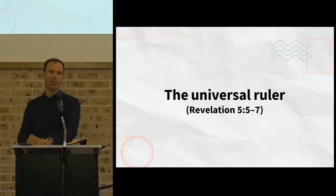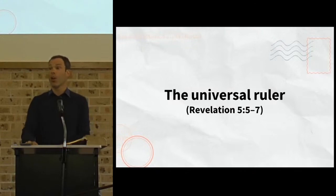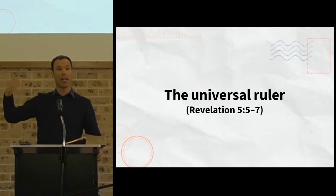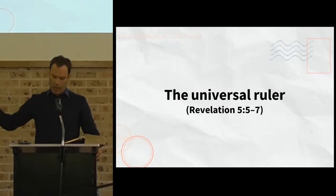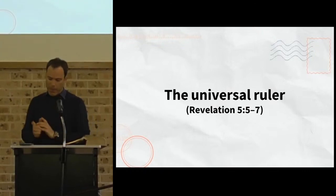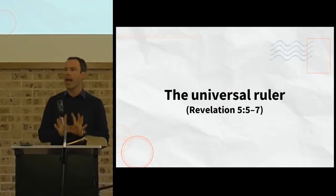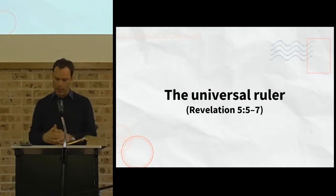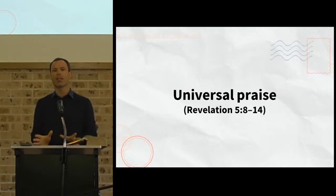Well, the lamb has taken the scroll. He's about to open it. And that's what's going to happen in the next few chapters, if you were to read on, in the book of Revelation. But before he does, there is this outpouring of universal praise, which is the rest of chapter 5. And this really is the climax of chapters 4 and 5.